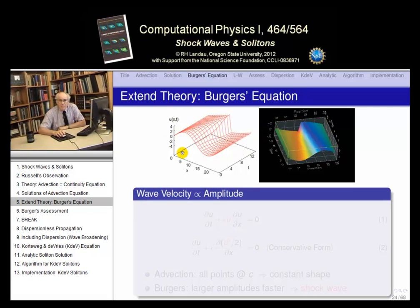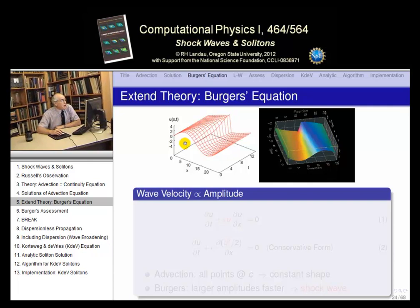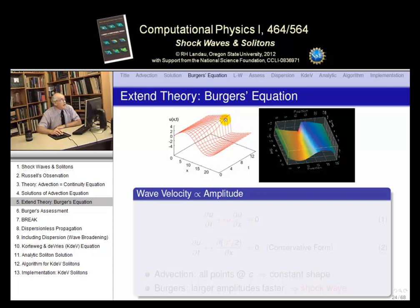We have two different visualizations: the left done with gnuplot, the right done with OpenDX. They both show an initial sine wave at time equals zero. Then as time moves along, the sine wave — which is smooth top and bottom — develops an edge. It becomes rather edgy. Later in time it develops a perfectly square edge, visible in the color visualization. That square edge is the shock wave.